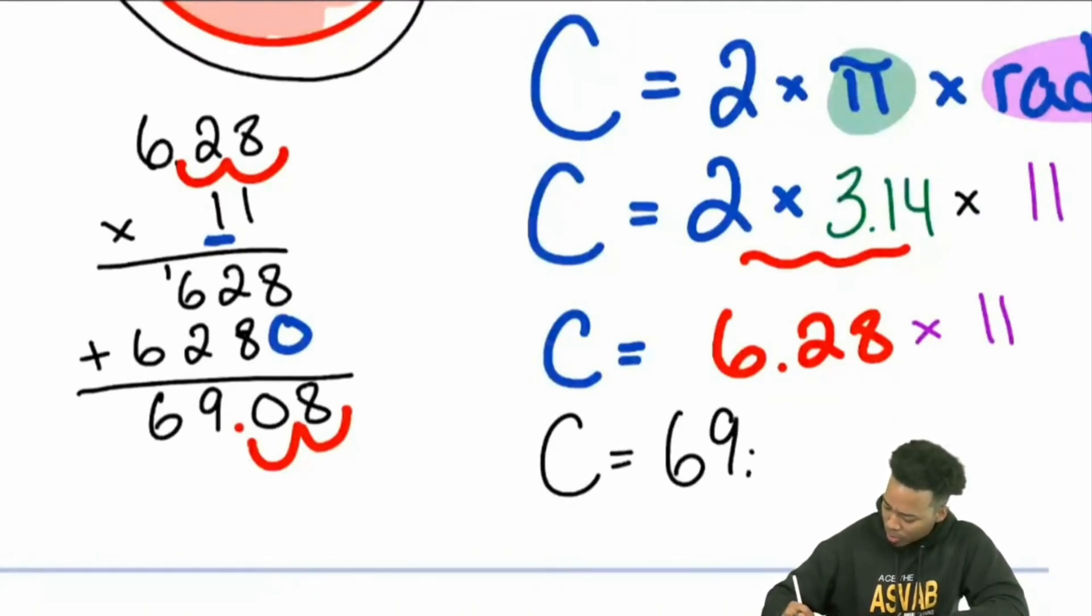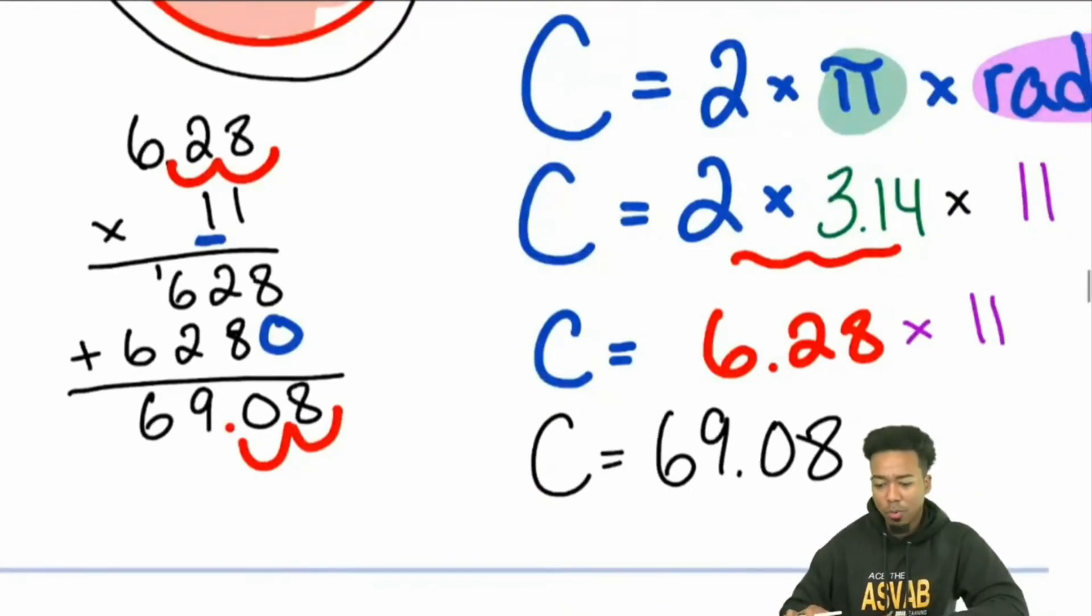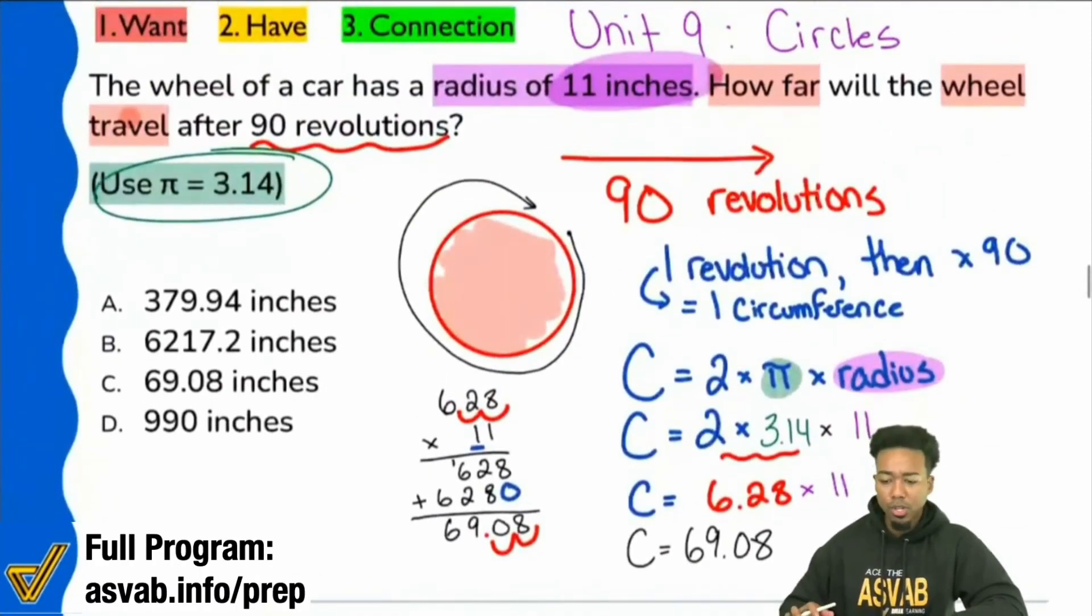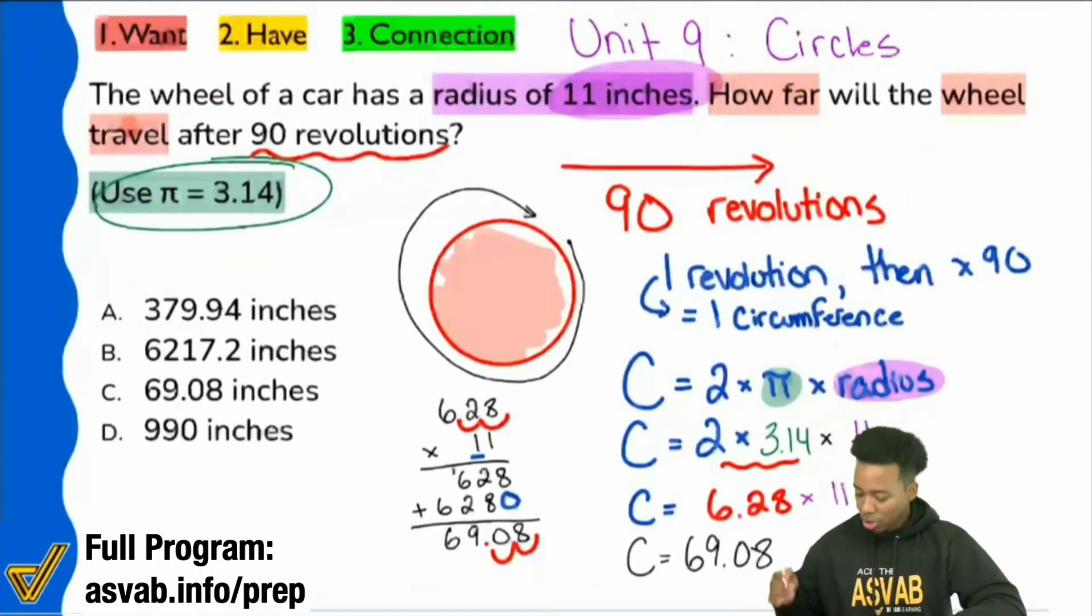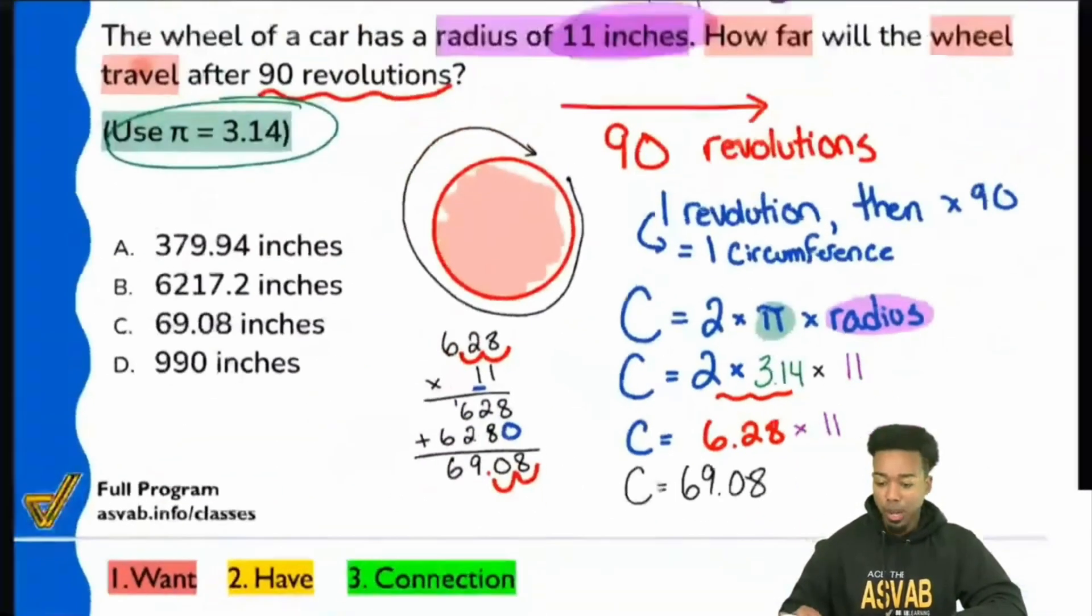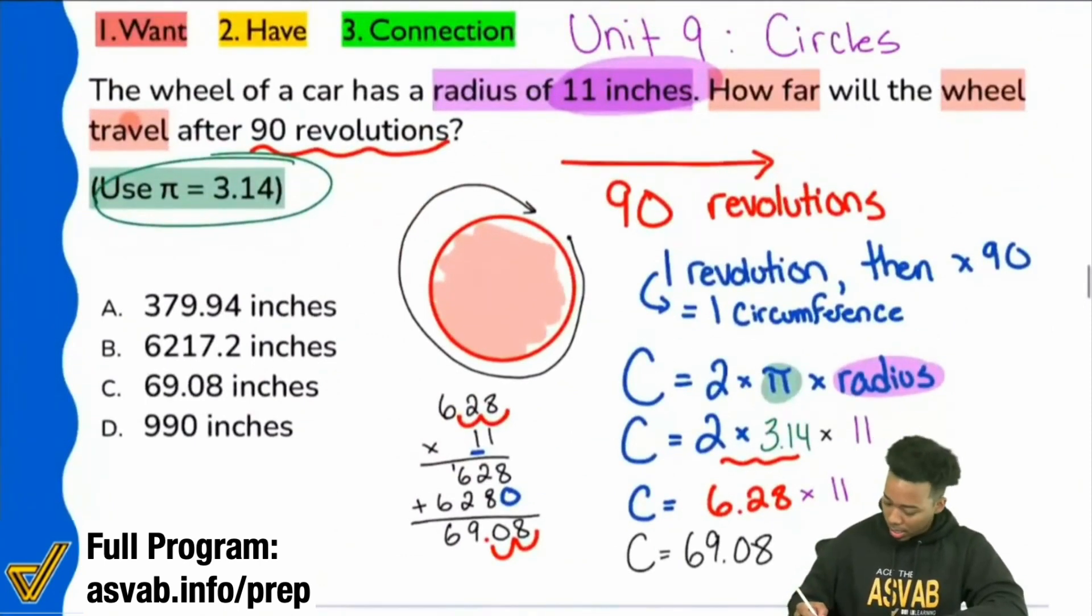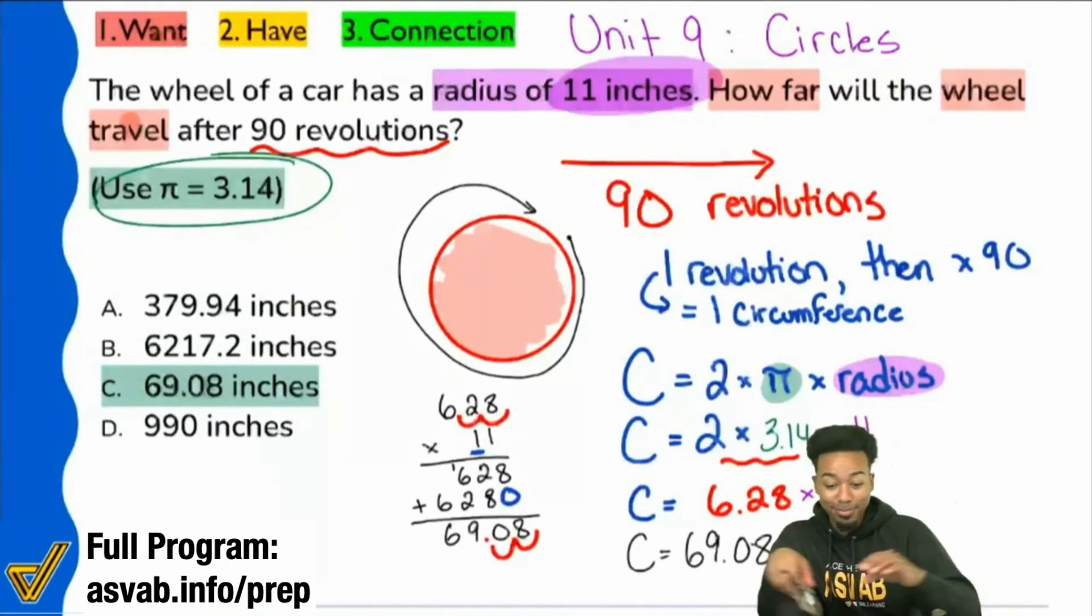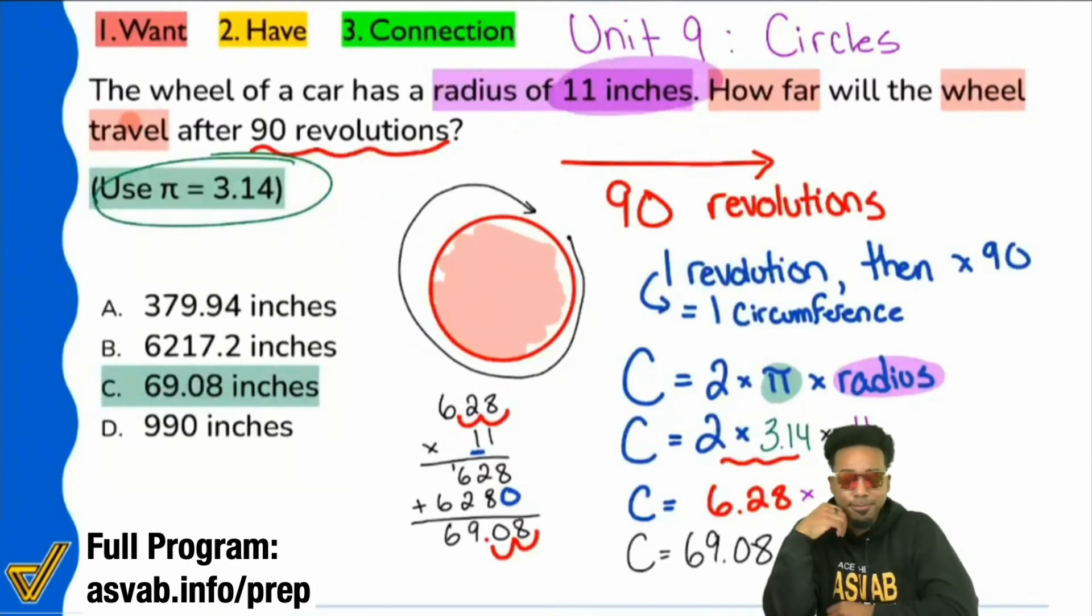Was that crazy, my party people, or was that doable? Was that crazy or was that doable? Right? Seems pretty straightforward, right? Seems pretty straightforward. So if we have someone that's very excited, someone who is proud of themselves, we did the calculations correctly, we have 69.08. My party people, are we done? Because I see the answer. It's C. Are we done? Are we done? We should be happy, right? We're done, right? We're done. We're done. No, we're not. What did we forget?